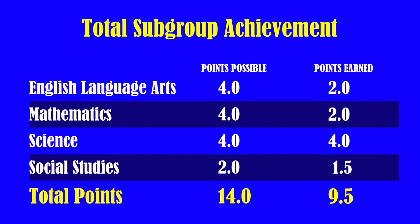For our total subgroup achievement, we earned 2 out of 4 points for our English Language Arts achievement, 2 out of 4 points for our mathematics achievement, 4 out of 4 points for our science achievement, and 1.5 out of 2 points for our social studies achievement. This gave us an overall score of 9.5 out of 14 points for our total subgroup achievement.